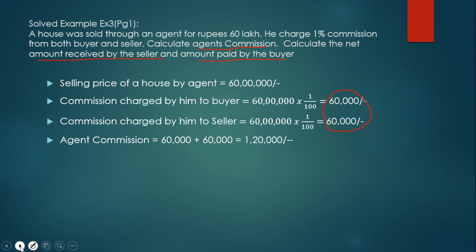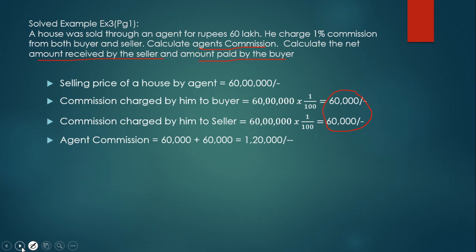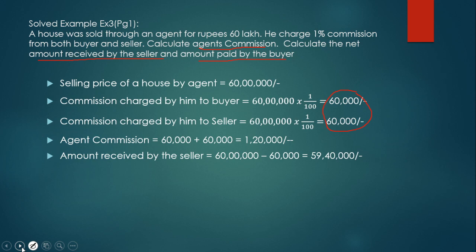Next, we find how much the seller receives. Before giving the amount to the seller, the agent's commission is deducted. So, the net amount received by the seller = 60 lakhs − 60,000 = 59,40,000.